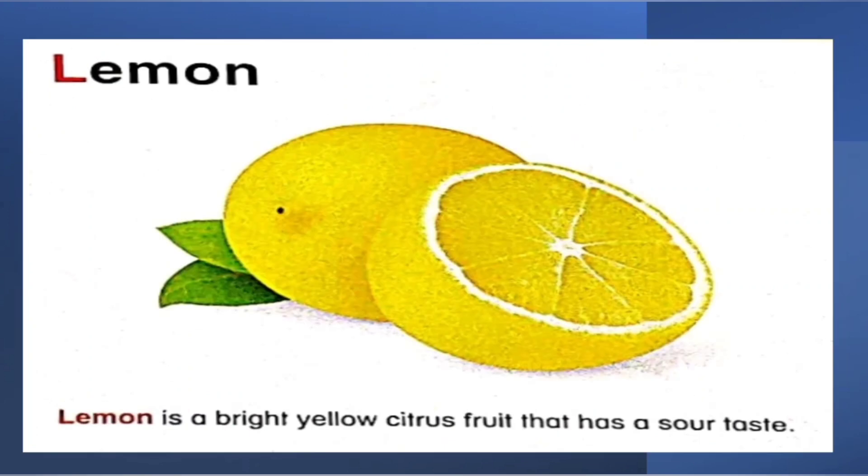L for lemon. Lemon is a bright yellow citrus fruit that has sour taste. What is the taste of it? It's sour. It's not sweet or something like that.